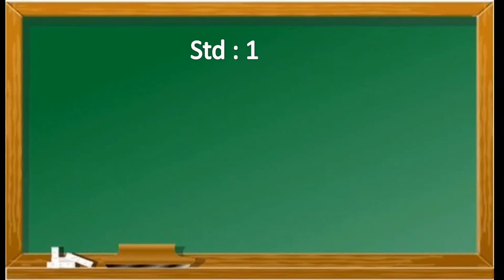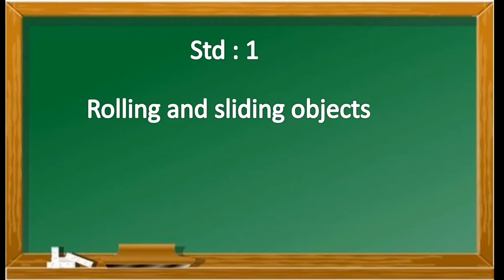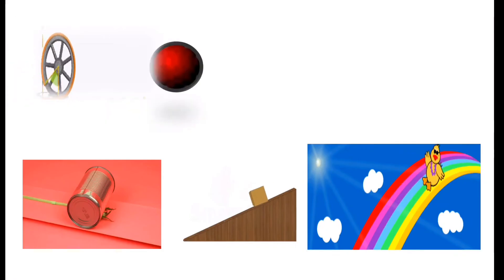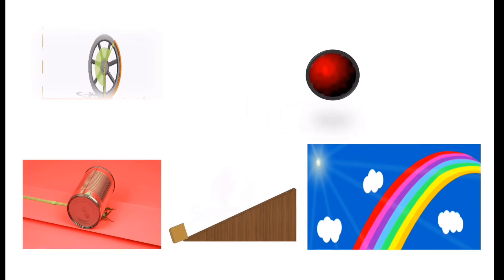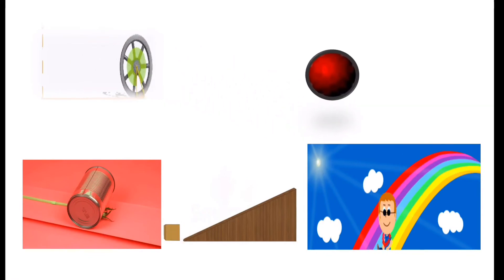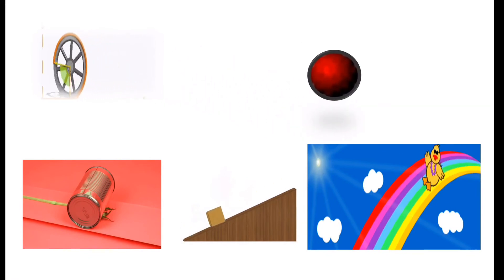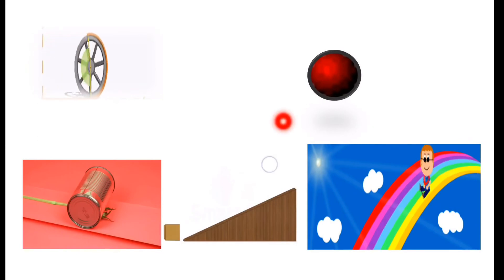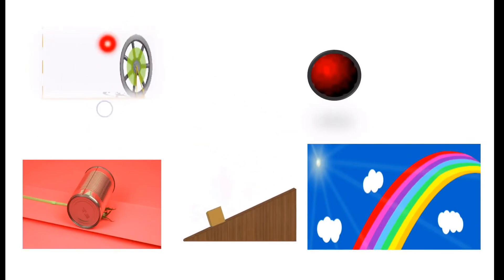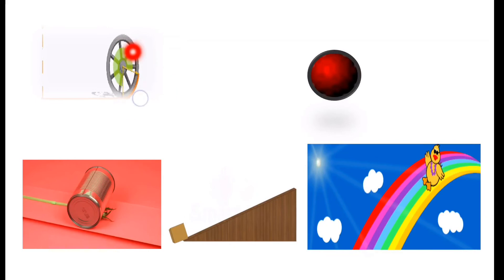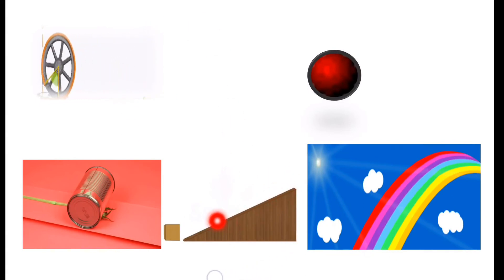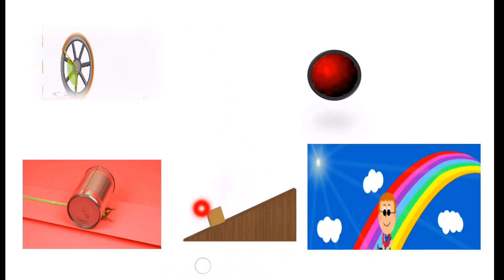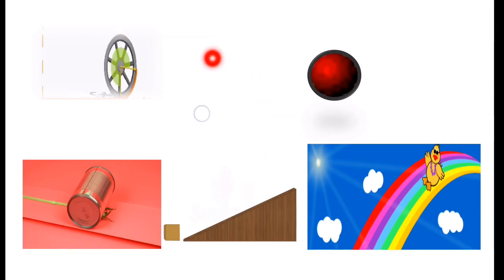Hello children, today we are going to look into Standard 1: rolling and sliding objects. Look at this — you can see some objects are rolling and some objects are sliding. You can see the wheel here, it is rolling. Now look at this box, it is sliding.